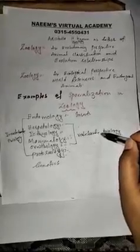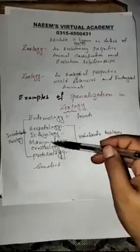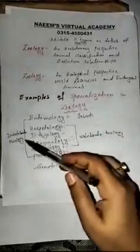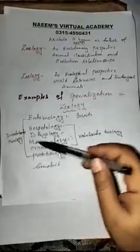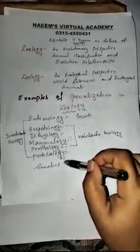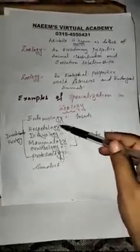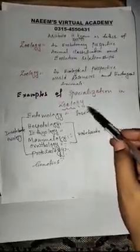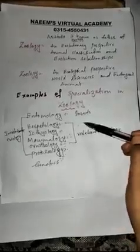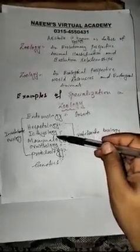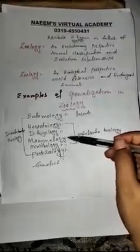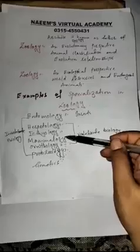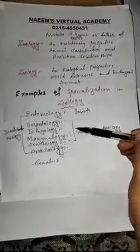Vertebrate biology includes herpetology, histology, mammalogy, and ornithology. Entomology and protozoology deal with invertebrate biology. Entomology is the study of insects, herpetology studies reptiles, ichthyology studies fishes, mammalogy studies mammals who give birth to their babies and nourish them.